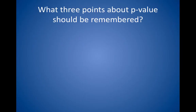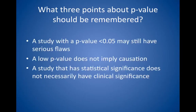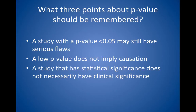What three points about p-values should be remembered for the Step 2 exam? 1. A study with a p-value less than 0.05 may still have serious flaws. 2. A low p-value does not imply causation. 3. A study that has statistical significance does not necessarily have clinical significance. For example, if drug X can lower blood pressure from 130/80 to 129/80 with a p of less than 0.0001, you will not use drug X because the result is not clinically important given the minimal blood pressure reduction, the cost, and probable side effects of the medication.